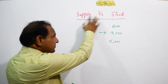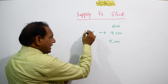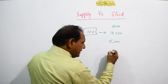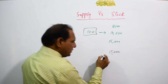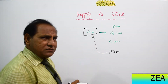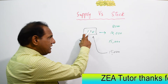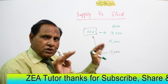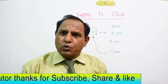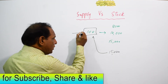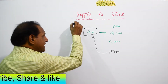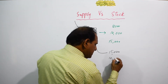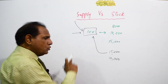Now what is the difference between supply and stock? I have already told you that I have 100 mobiles in my shop. If the price of a mobile is 15,000 rupees, I would like to sell all these mobiles. The mobiles I am going to sell are known as supply, and the total mobiles I have in my hand are known as stock. So here my stock is 100 mobiles and my supply is also 100 mobiles.